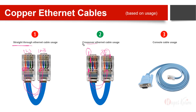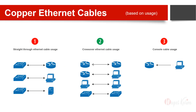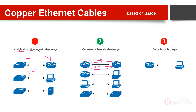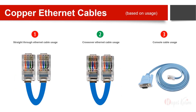Crossover is needed because when devices are the same, both cannot transmit on the same pin. If both sides transmit on the same pin, there is a chance of collision. That's why we cross some pins — so one device transmits on pin 1 and the other transmits on pin 3. With straight-through cables, different devices like a switch and router already negotiate and transmit on different pins by default.